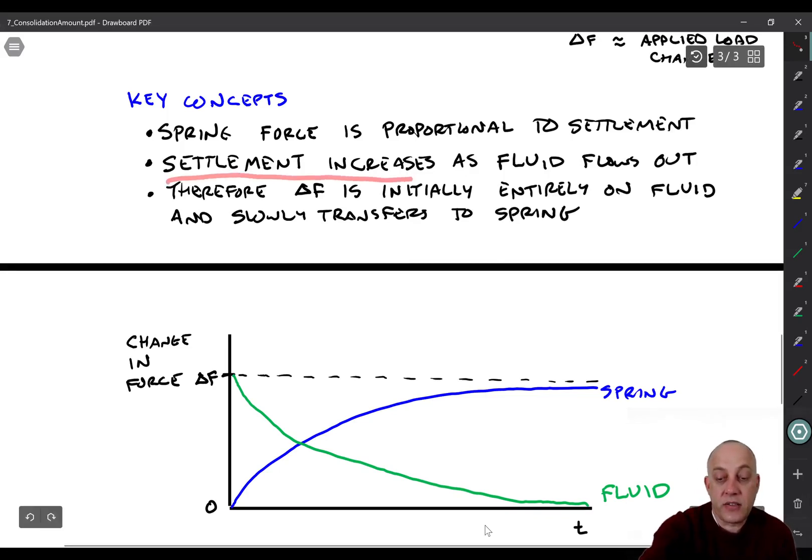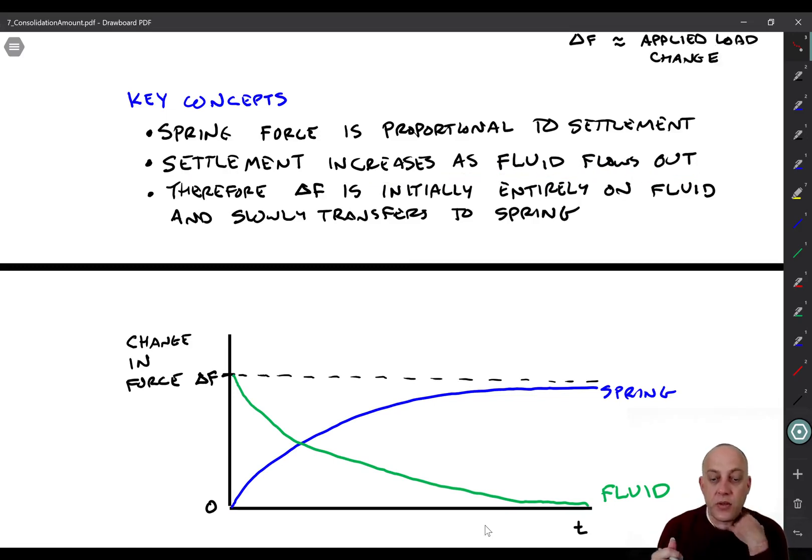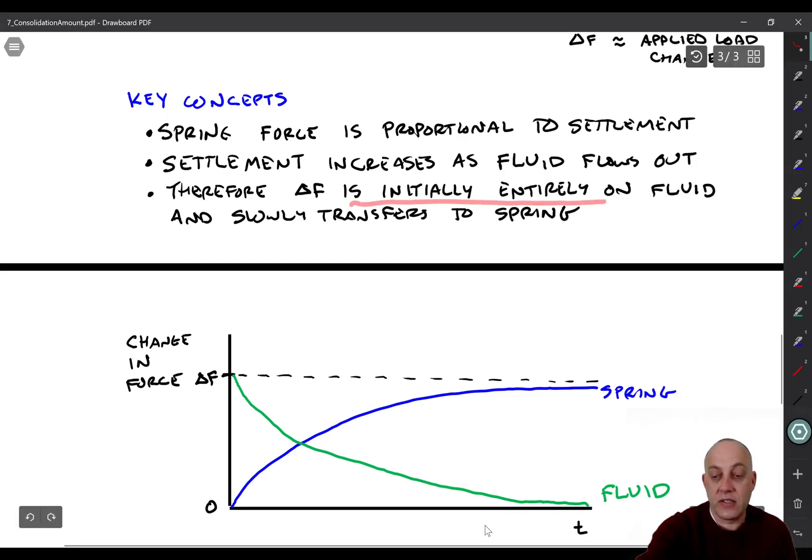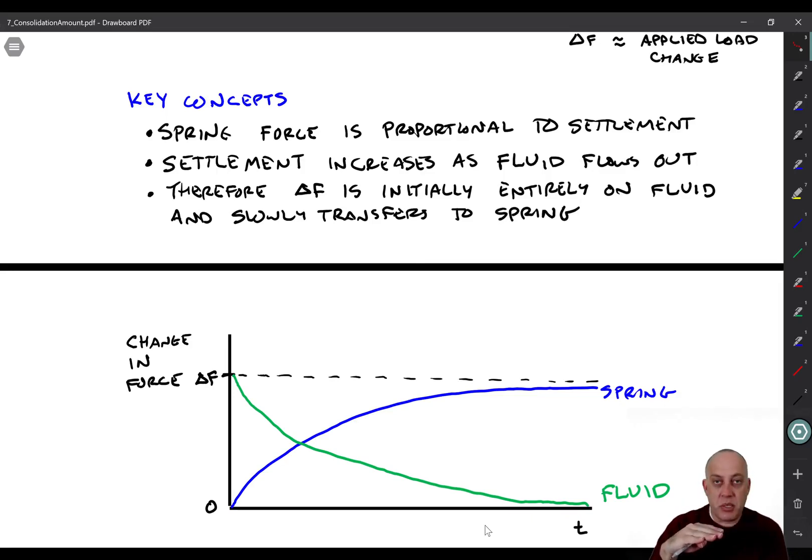Settlement increases only as the fluid flows out. So the settlement can't start happening until the fluid goes through that little hole. Therefore what happens is when you apply that delta F, let's say it's an instantaneous load application, initially all of that force is transferred to the fluid and then slowly transfers to the spring, right? So when you first apply it, all of it goes on to the fluid because the spring has not had time to start deforming yet. And then only as the fluid is squeezed out of the piston due to that pressure on it and the spring starts settling do you start getting loading on the spring.